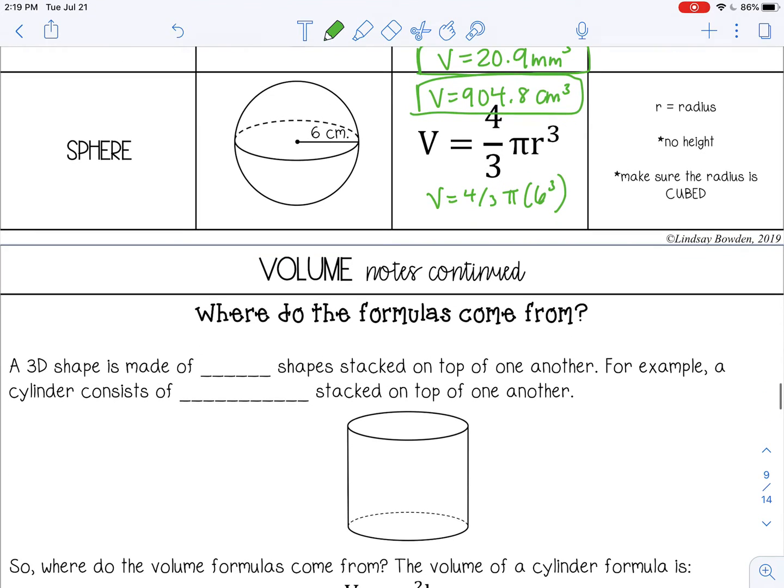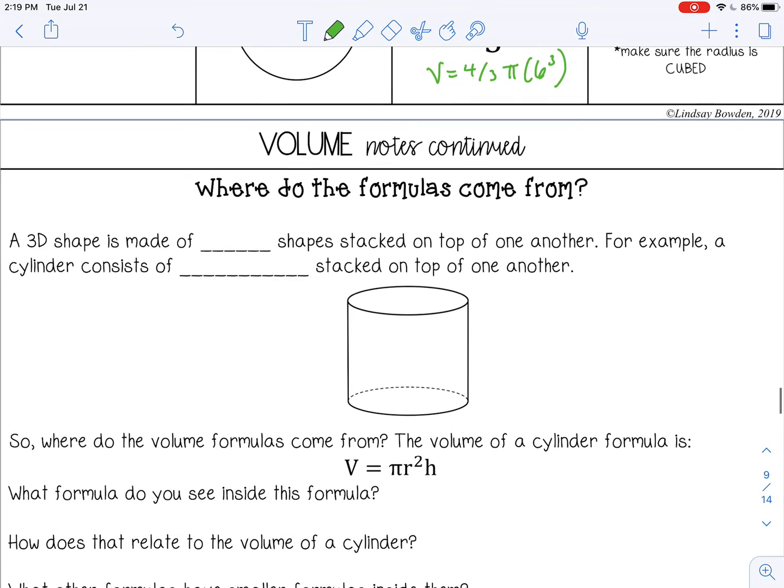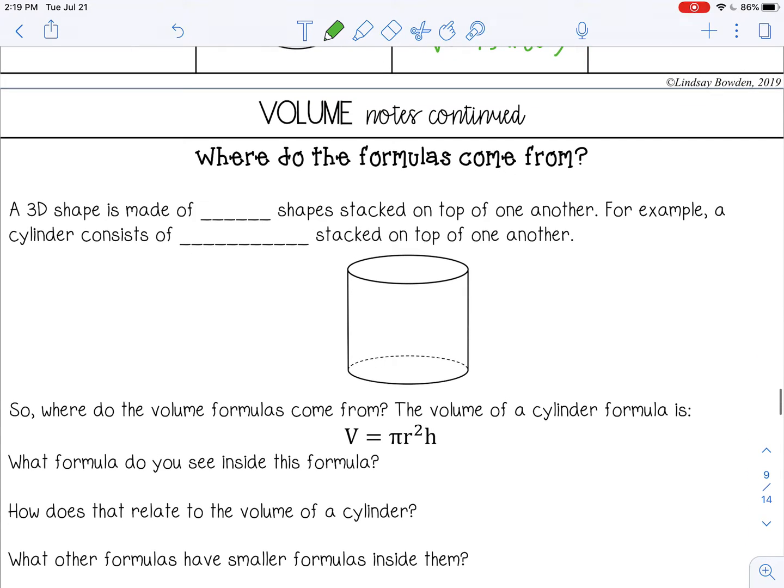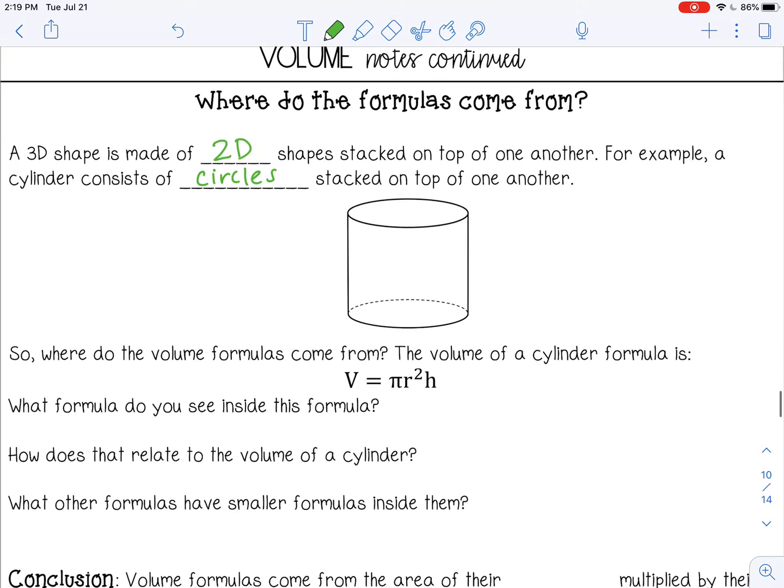Let's continue on and talk about where these formulas come from. So remember, a 3D shape is made up of two-dimensional shapes or 2D shapes that are stacked on top of each other. So if you think about, for example, a cylinder, a cylinder is really just circles that are stacked on top of each other, just a lot of circles stacked on top of each other.